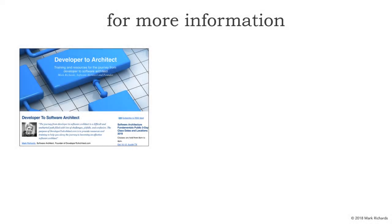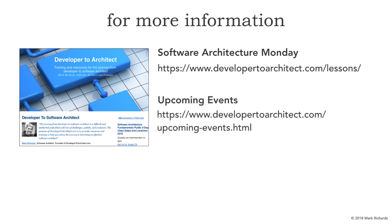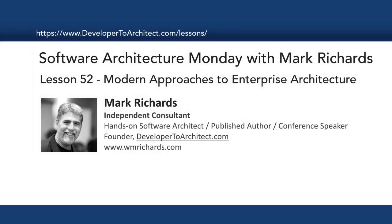For more information, you can go to Software Architecture Monday where all these lessons are housed. You can also see where I'll be speaking at public training, online training, and conferences at my upcoming events page on my website. This has been Software Architecture Monday, Lesson 52 — the modern approaches to enterprise architecture, bridging the past three lessons to see the traditional approaches, both the model-driven and initiative-driven approaches, why they don't work, and some modern approaches to enterprise architecture. Thanks for listening, and stay tuned next Monday for another lesson in software architecture.